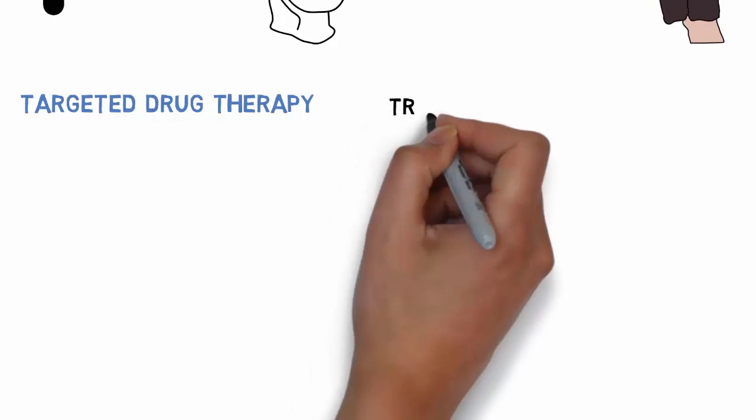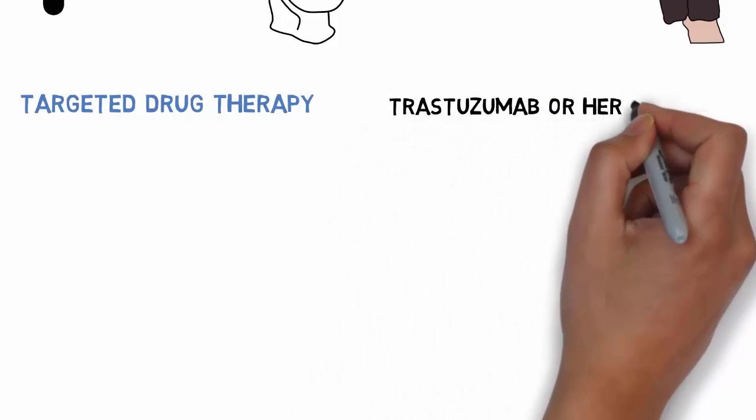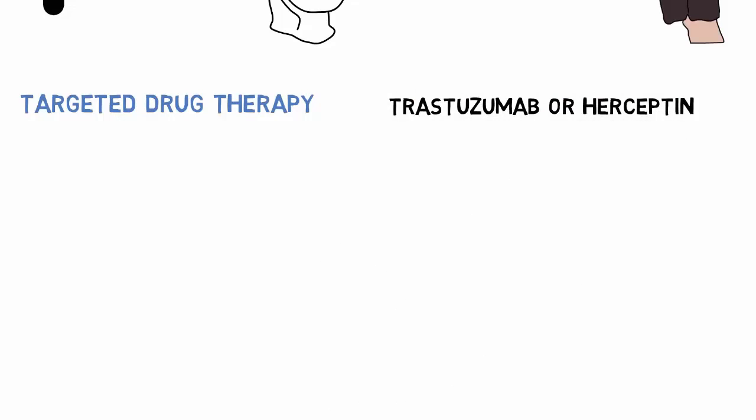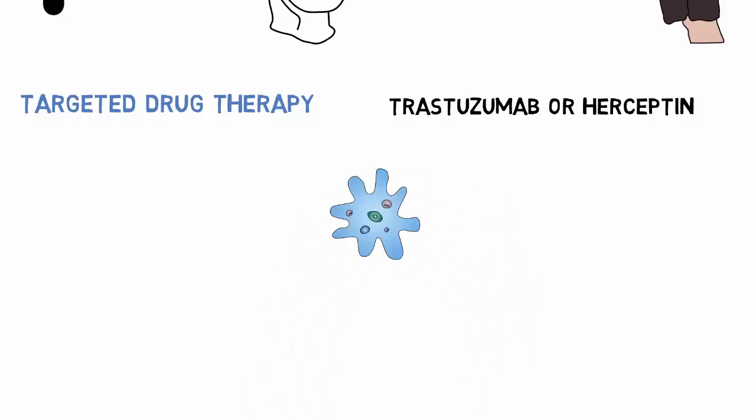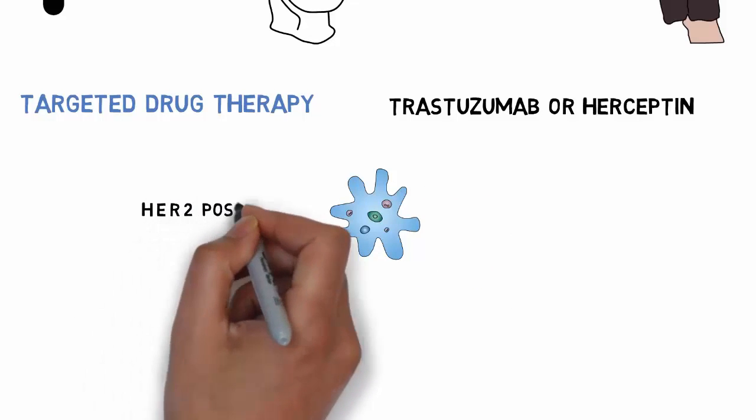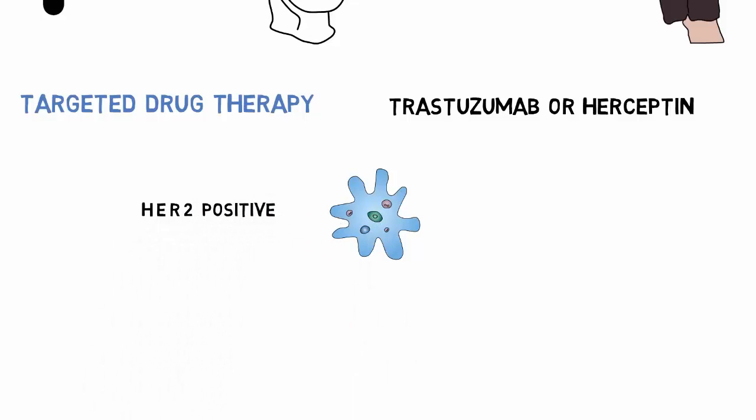Next is targeted drug therapy. There are newer cancer treatments called targeted therapies that work by targeting specific abnormalities in cancer cells. Targeted therapy is generally used in combination with chemotherapy. Trastuzumab or Herceptin: There is a protein called human epidermal growth factor receptor 2 positive, or HER2 positive, which promotes cancer cell growth.